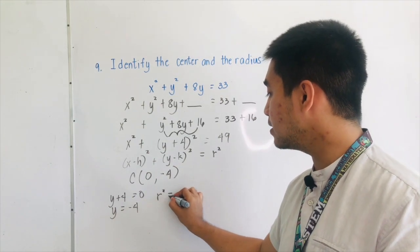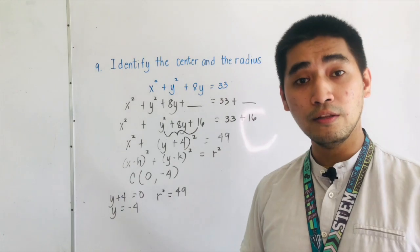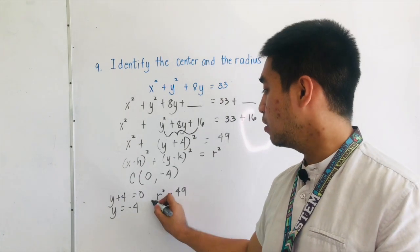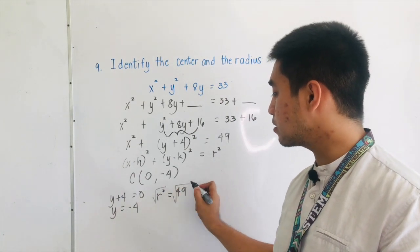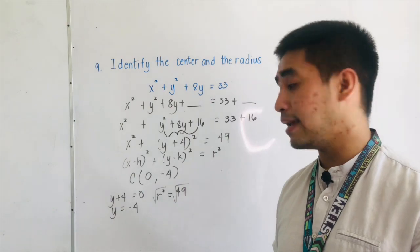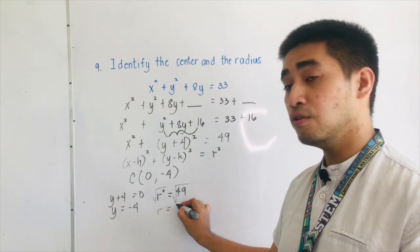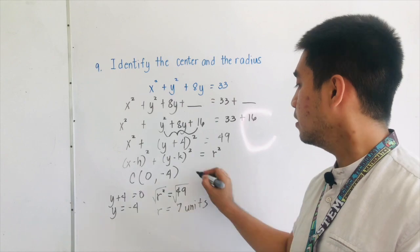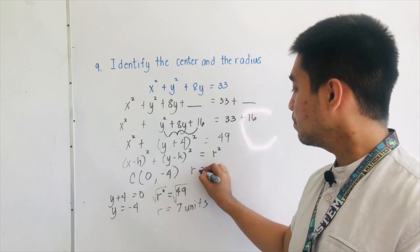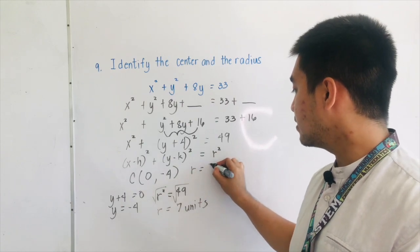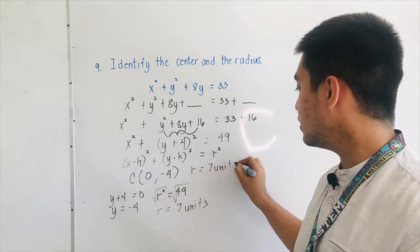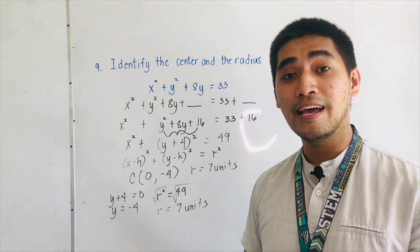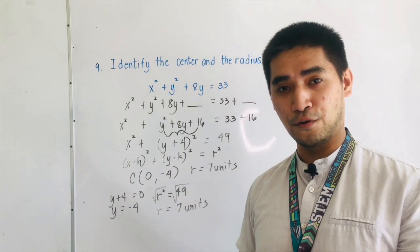R squared is equal to 49. To find r, we get the square root. Square root of r squared is r, and square root of 49 gives us r equal to 7 units. Therefore, r is equal to 7 units and the center is located at (0, negative 4).